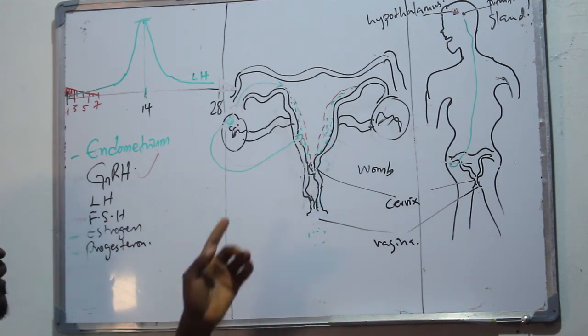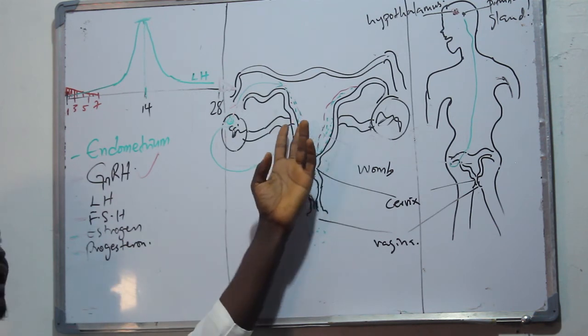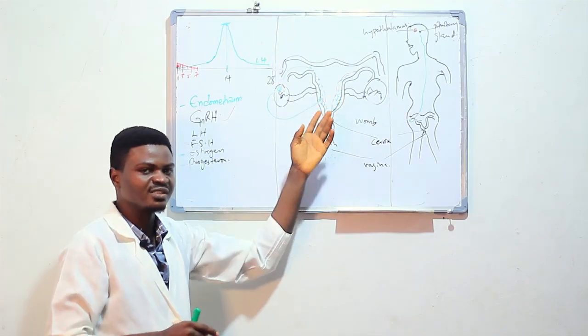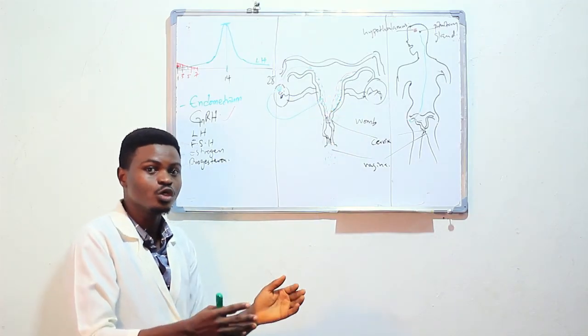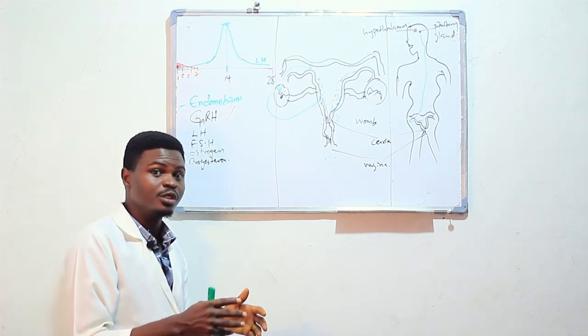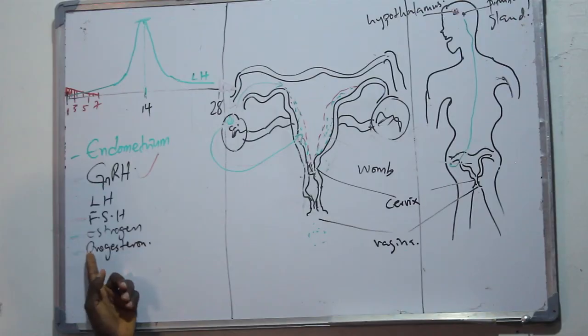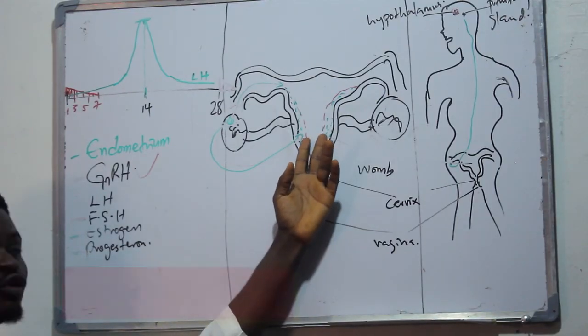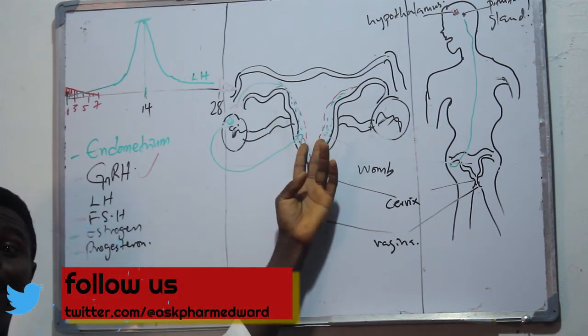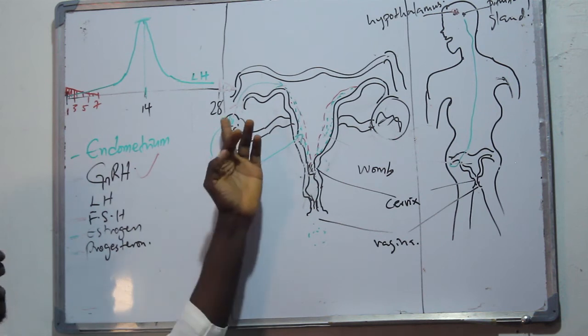The endometrium needs to be maintained so that the fertilized egg, in an event of fertilization, will come and stay. It's just like putting security in your house to maintain the house or to protect the house so that when you come back from a journey, you can come back and meet a peaceful and habitable home. So the work of the progesterone is to maintain the endometrium that the estrogen has already built.